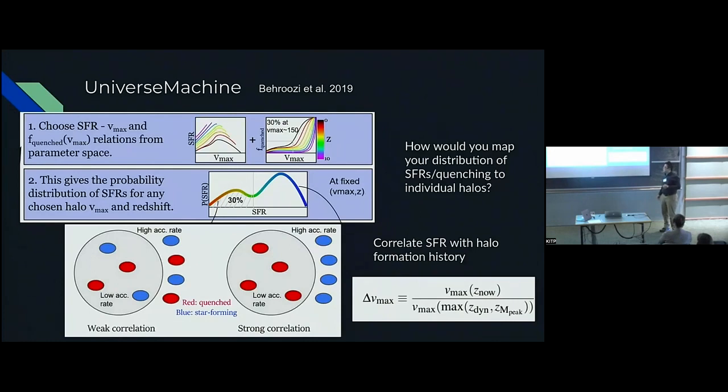If there is a very weak correlation between individual halos star formation rate and their recent accretion history, the probability of being quenched or star forming is almost independent. But if your star formation rate correlates perfectly with your halo accretion rate, then you only quench the low accretion stuff in halos and you keep all the field galaxies star forming.